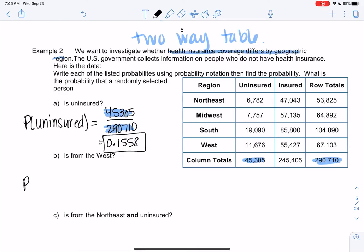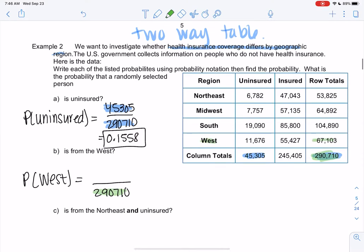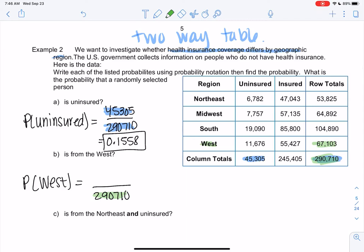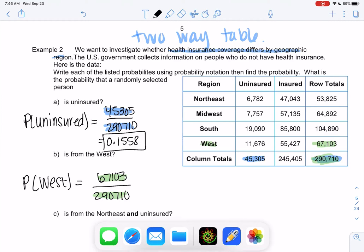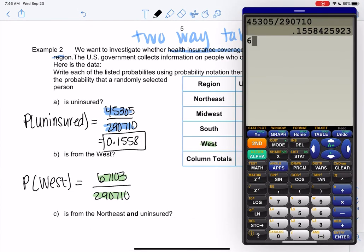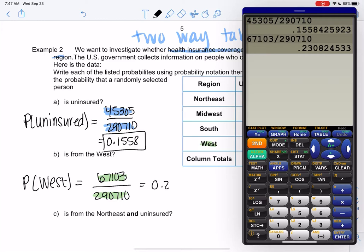Let's do probability that someone is from the West. So it's still out of 290,710. The total hasn't changed. But now we're looking at people from the West. So here's the West. We're going to go all the way over to the total for 67,103. And we'll divide. And we get a 0.2308 chance. About 23%, a little over.